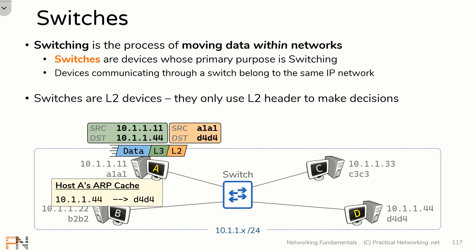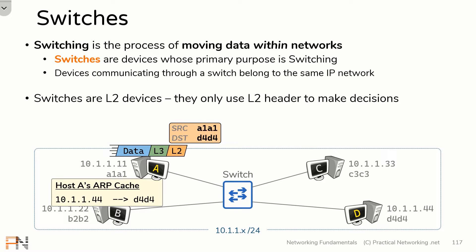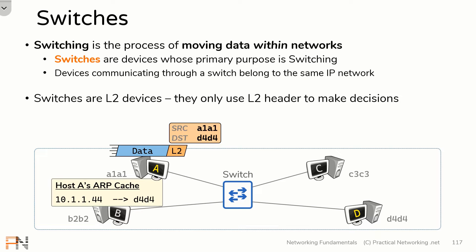A switch is a layer 2 device, which means it's only going to use the layer 2 header to make its decisions — the switch doesn't look at the layer 3 header at all. In fact, everything after the layer 2 header, from the switch's perspective, is simply considered data. You and I know there's a layer 3 header in there, but from the switch's perspective it doesn't care. Because we're focusing on the switch, we can actually get rid of anything IP-related on this topology — we don't need to consider the IP addresses.